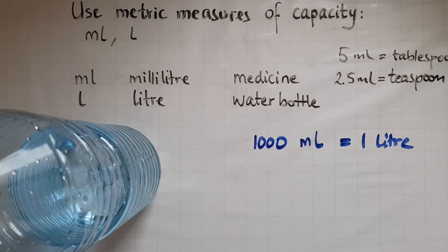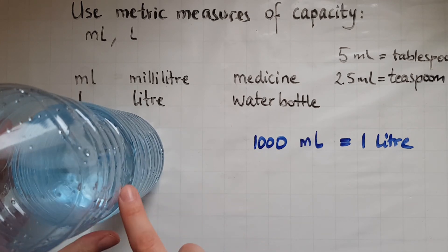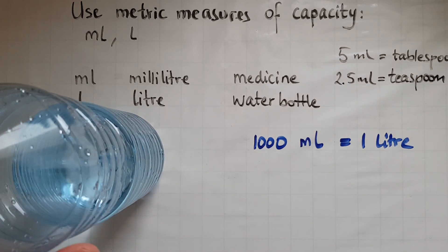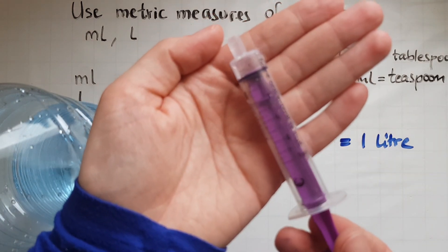And how do we actually measure the capacity? And that is through measuring jugs. So they've got marks on them, like the bottle, and shows how much there is in each one. Or like I showed you with this syringe.